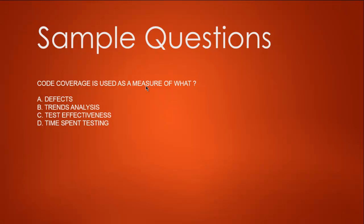So option A for defects is wrong, option B trend analysis is again wrong, C test effectiveness is closer, and D time spent testing—so time spent testing is again not a measure. So option C looks true here. So the answer is C.